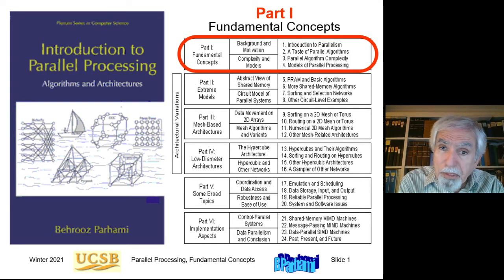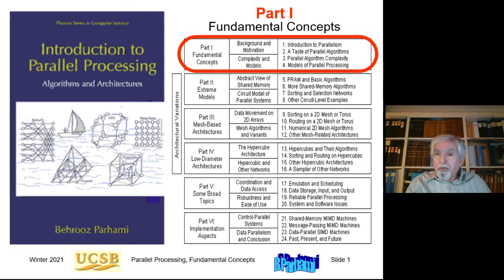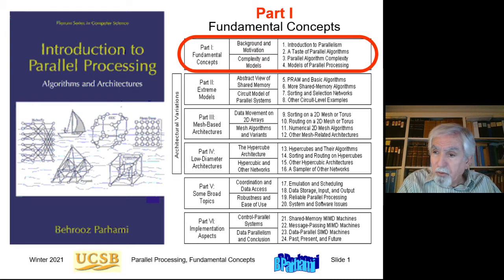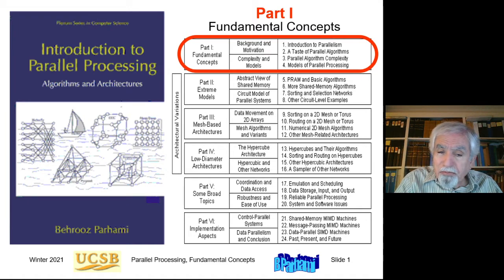Hello and welcome to the graduate course ECE 254b, Advanced Computer Architecture Parallel Processing. The subject of the course is Parallel Processing, and originally it was part of a three-course sequence entitled Advanced Computer Architecture — that's where the name 254b comes from. It was the middle course in that three-course sequence, but the other two courses have been discontinued while this course has kept its original name.